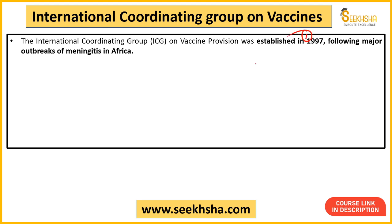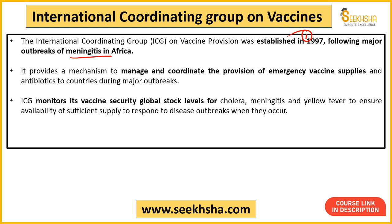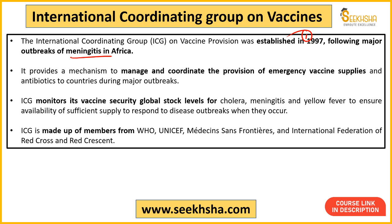The International Coordinating Group on Vaccines was established in 1997, specifically during the meningitis outbreak in Africa. It coordinates emergency vaccine supplies for diseases like cholera, meningitis, and yellow fever to assure vaccine supply. The actual members are WHO, UNICEF, Médecins Sans Frontières (Doctors Without Borders), and the International Federation of Red Cross and Red Crescent Societies — not World Bank.